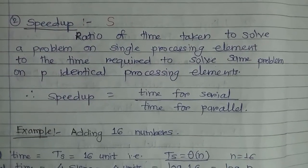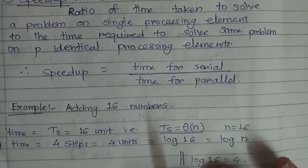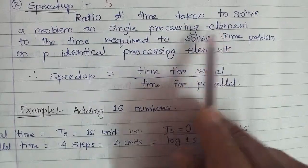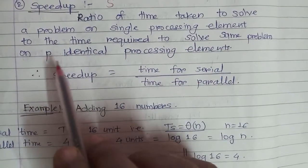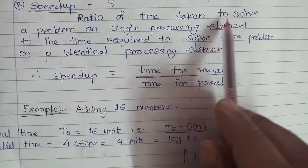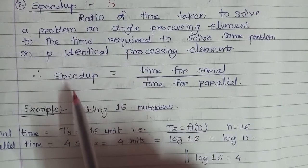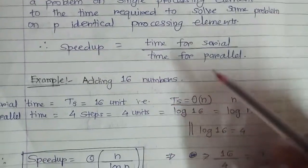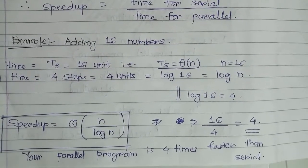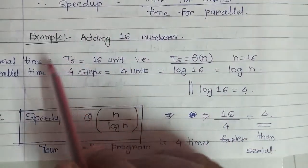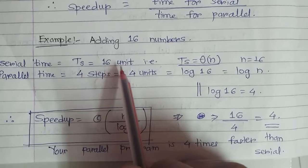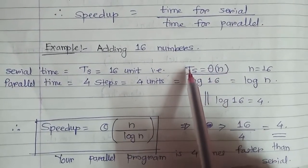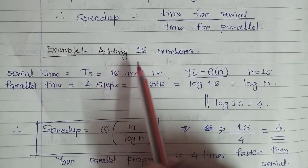Speedup is another metric to check the efficiency or performance of your parallel system. Speedup is the ratio of time taken to solve a problem on a single processing element to the time required to solve the same problem on p identical processing elements. In other words, speedup S equals serial time divided by parallel time. For example, consider the addition of 16 elements. If we add 16 elements serially, the serial time is 16 units — that is, theta of n where n equals 16.